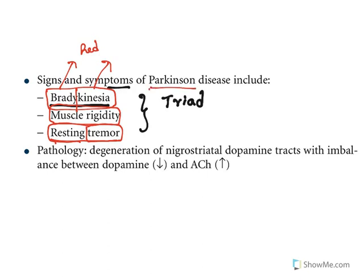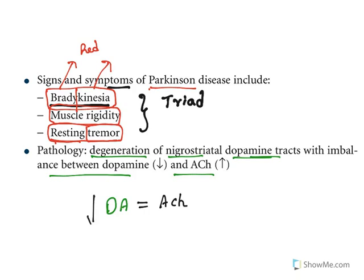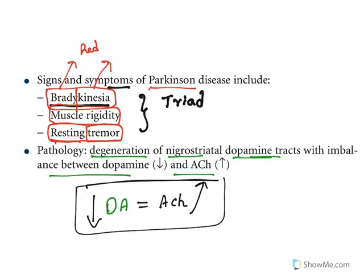What happens in this pathology? There is degeneration of nigrostriatal dopamine tracts with an imbalance between dopamine and acetylcholine. Dopamine is present in the nigrostriatal pathway, and there is a smooth balance between dopamine and acetylcholine. When dopamine levels go down, the effects of acetylcholine will be increased. So how do we treat it? Either by enhancing dopamine or by reducing acetylcholine effects. These are the two treatment strategies for Parkinson's disease.